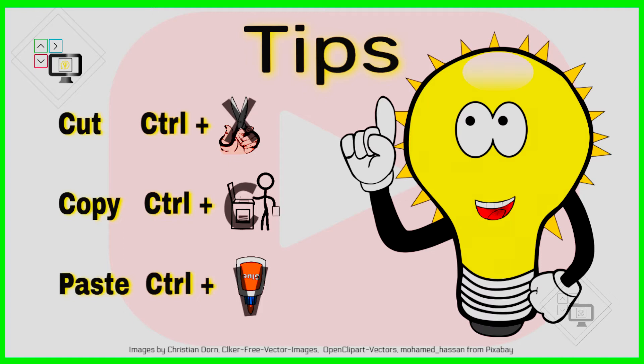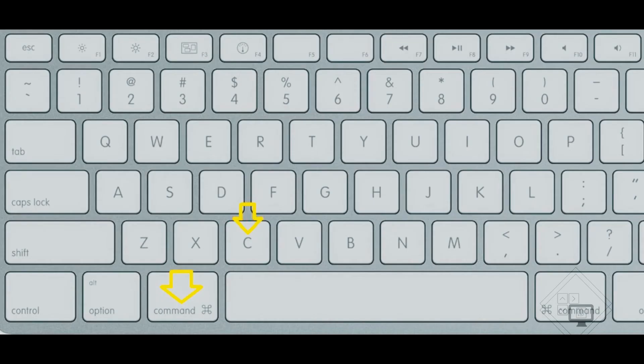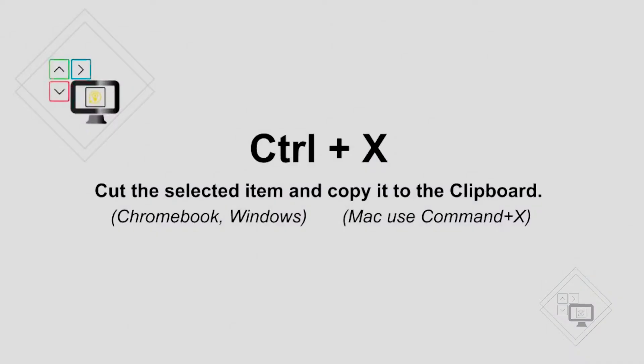These keyboard shortcuts require you to hold down two keys at one time. The first shortcut keys I'll show you is how to cut and remove the selected item, which copies the text to the clipboard. The shortcut command to cut selected items is the control key and X when using a Windows or Chromebook computer, or the command key and X when using a Mac computer.